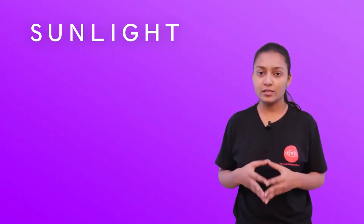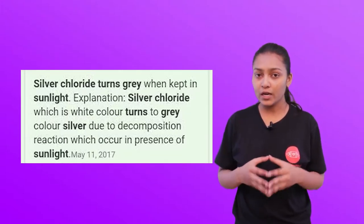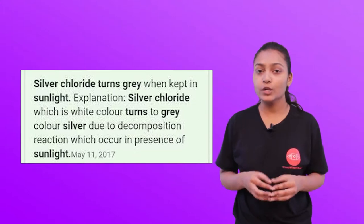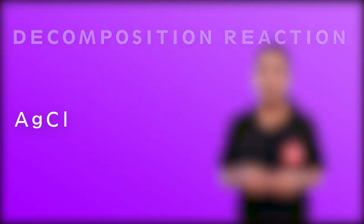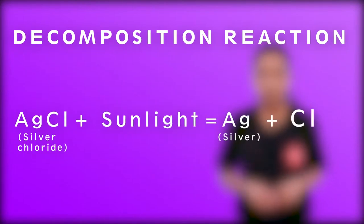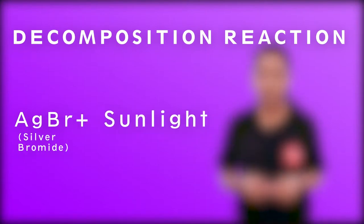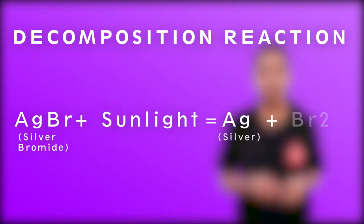For that, let us take an example. If you keep silver chloride in the presence of sunlight, after a few minutes you will observe that the white colored silver chloride gets converted to gray color. The reaction taking place here is: silver chloride is decomposed into silver and chloride. Similarly, if you place silver bromide in the presence of sunlight, it decomposes into silver and bromine. Both these reactions are used in black and white photography.